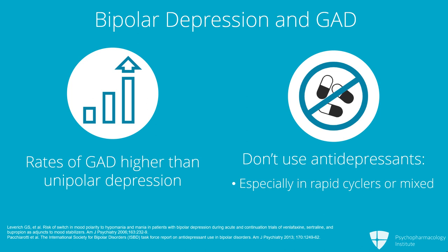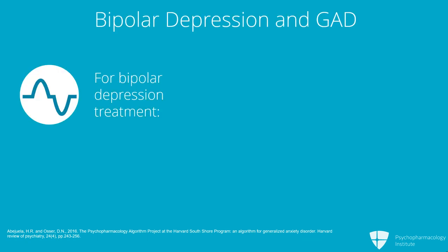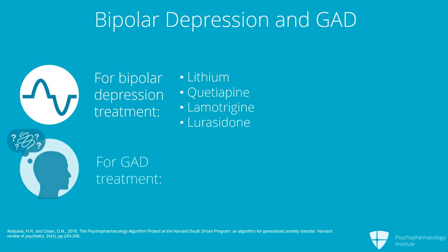I stress this because I know many of you are using antidepressants for bipolar depression — we urge you not to do so. The four most evidenced treatments for bipolar depression are lithium, quetiapine, lamotrigine, and lurasidone, not necessarily in that order. For the GAD comorbid with bipolar depression, we would skip the antidepressants and go directly to hydroxyzine, pregabalin, and benzodiazepines.